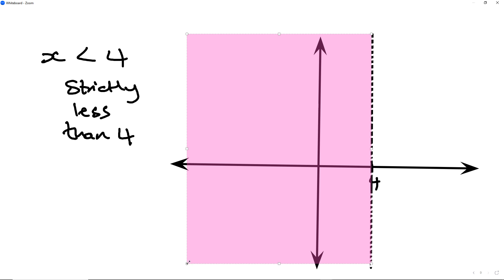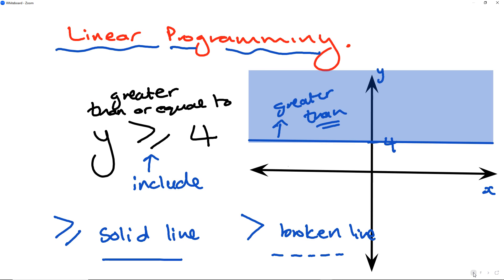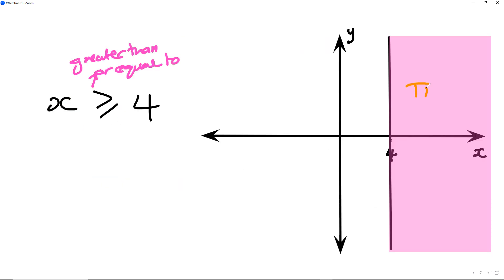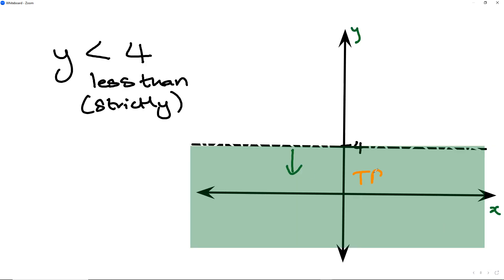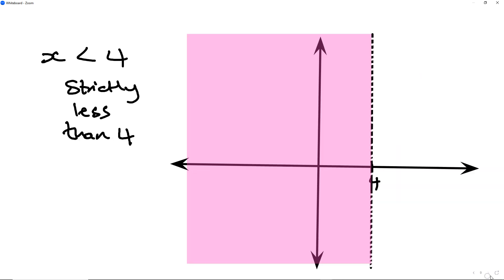In each of these cases I've shaded in what is known as the true region. This is the region which is true; the other side is false. If I choose any number in the false region and substitute it in, it will be false. Any number in the true region will be true. Likewise for each graph: true region on one side, false region on the other.